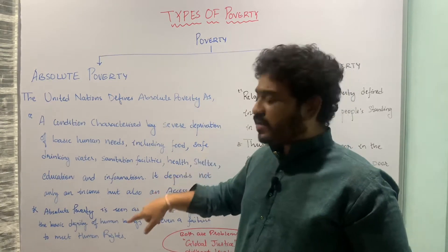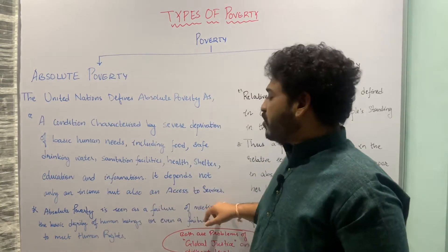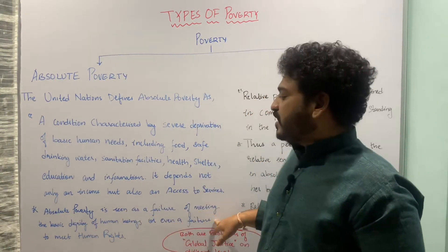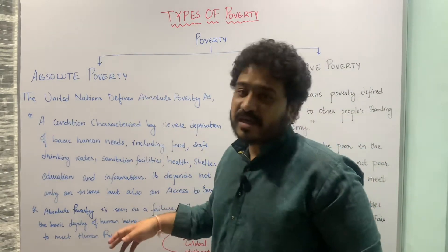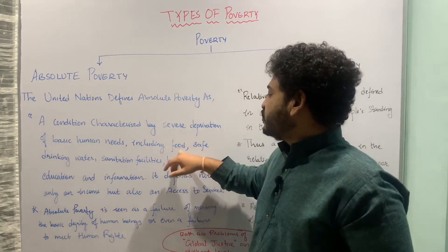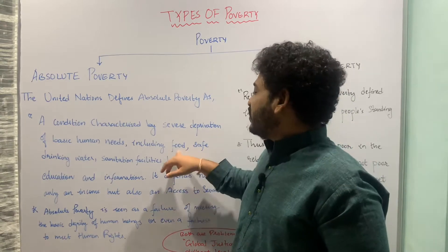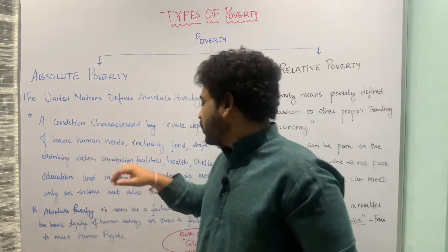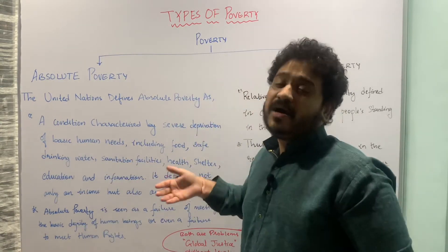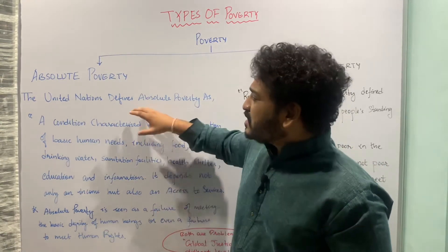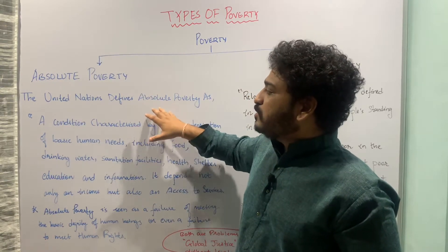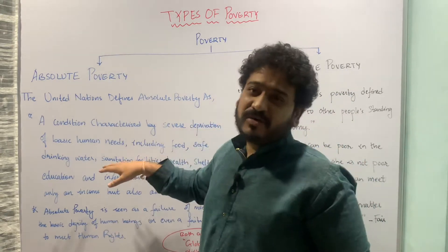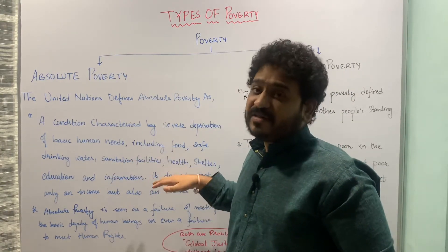Furthermore, absolute poverty is seen as a failure of meeting the basic dignity of a human being, or even a failure to meet human rights — that is, the right to education, the right to food, food security, or basic services such as sanitation, drinking water, education, and health. So absolute poverty represents severe deprivation not only in terms of income per se but also in terms of access to different services.